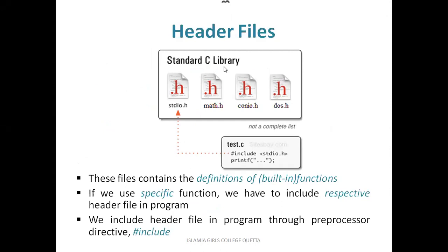The standard C library contains many header files like stdio.h, math.h, and this is not a complete list. There are many other header files present, and those header files are important because they contain the definitions of built-in functions. Built-in functions are those which are present inside those header files and they are ready to use. So if we use some specific function from those header files, then we have to include the respective header file in the program — the file in which that function was present.